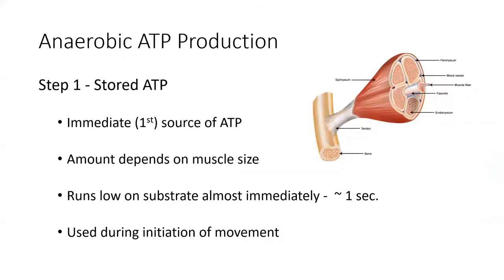The first step in anaerobic ATP production is using stored ATP within the muscle. We have this available ATP that's already been rephosphorylated and is ready to use. Depending on your muscle size will determine how much ATP that muscle can store, but it's very very low — think of it as just the energy needed for quick reflexive reactions, less than a second. Once we break it down it's gone.